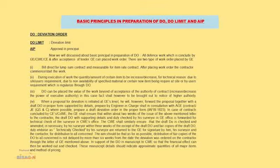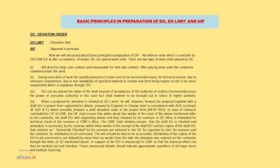The CW shall similarly ensure that the draft DO is checked and amended if necessary by his surveyor within 3 weeks of the receipt of the draft DO. Fair copies of the draft DO, duly endorsed after technical check by his surveyor, are then sent to the GE for signature, ensuring the DO is not delayed by more than 6 weeks from the date the deviation was ordered on the contractor.